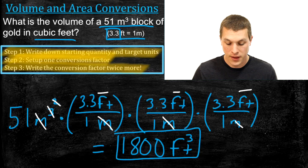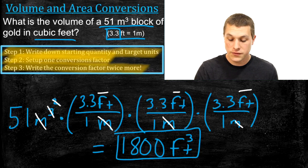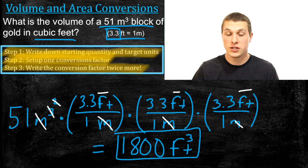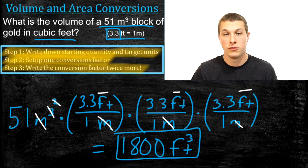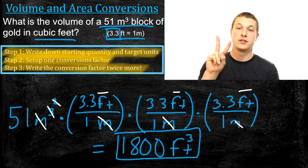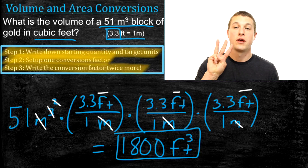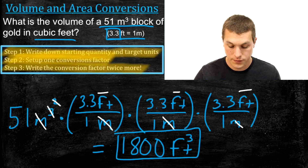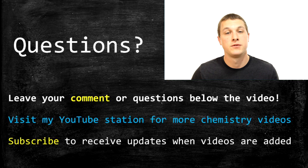So our 51 meters cubed block turns out to be 1800 cubic feet — an upper-end estimate for the total amount of gold ever mined. To summarize: area and volume conversions look very similar to traditional conversions, but we must apply the conversion factor more than once. For area conversions, use two conversion factors; for volume conversions, use three. Thanks for watching Real Chemistry — please leave a comment below or subscribe for updates.